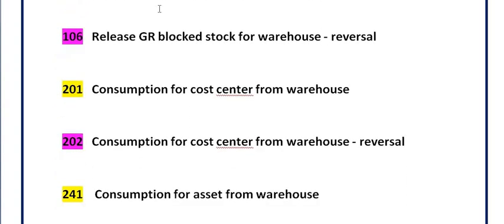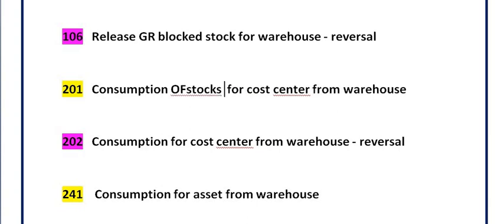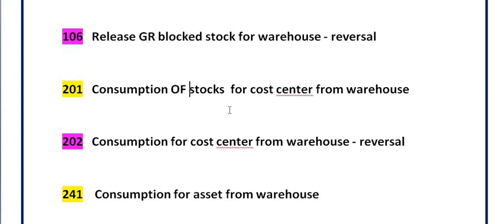Movement type 201 is frequently used for consumption against a cost center from the warehouse. For example, if you have purchased pens, paper, and daily-use articles for your office — items whose value is not going to be used in maintenance or capital projects — those stocks are directly consumed against a cost center, hitting a GL provided by the accounts section for general expenses. Movement type 201 is frequently used in all departments.